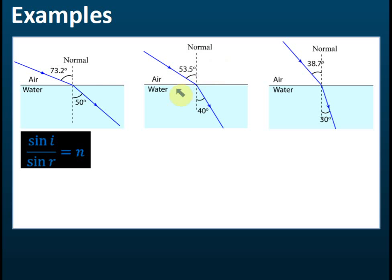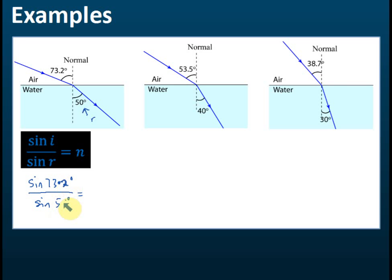Let's look at some examples. Here we can see a light ray moving from air to water. The angle of incidence is 73.2 degrees and the angle of refraction is 50 degrees. So sine i over sine r equals sine 73.2 degrees divided by sine 50 degrees, which gives 1.25.